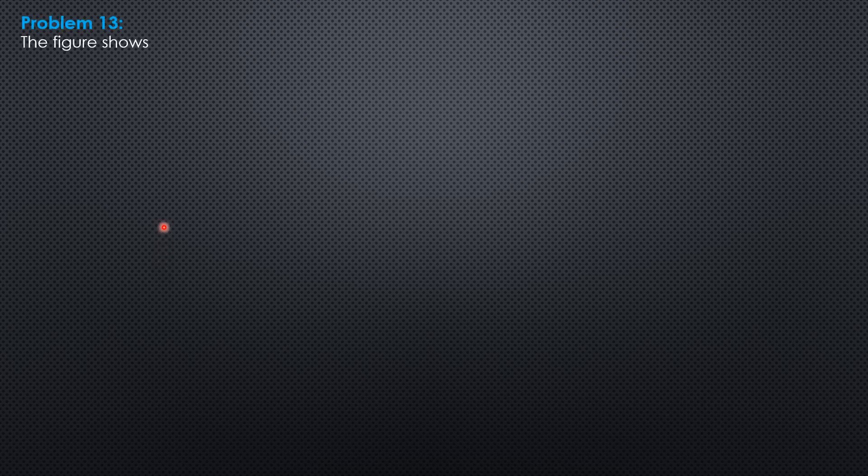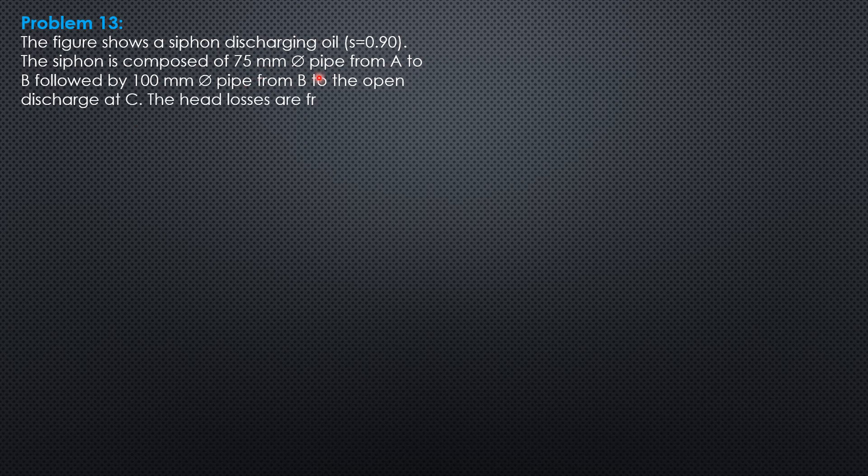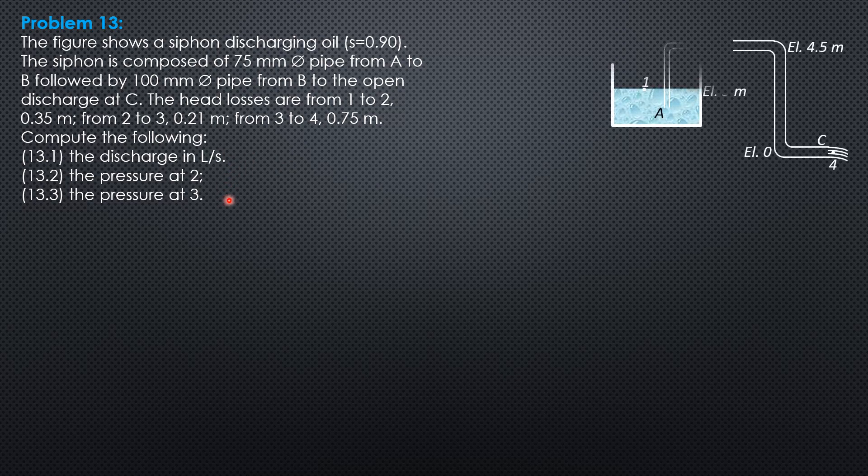Problem 5M13. The figure shows a siphon discharging oil of specific gravity 0.9. The siphon is composed of 75mm diameter pipe from A to B followed by 100mm diameter pipe from B to the open discharge at C. The head losses are from 1 to 2: 0.35m, from 2 to 3: 0.21m, from 3 to 4: 0.75m. Compute the following: the discharge in liters per second, the pressure at 2, the pressure at 3.